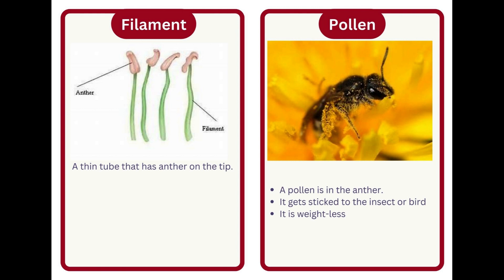Filament. A thin tube that has the anther on the tip. Pollen. Pollen is found in the anther. It sticks to the insect or bird. It is weightless.